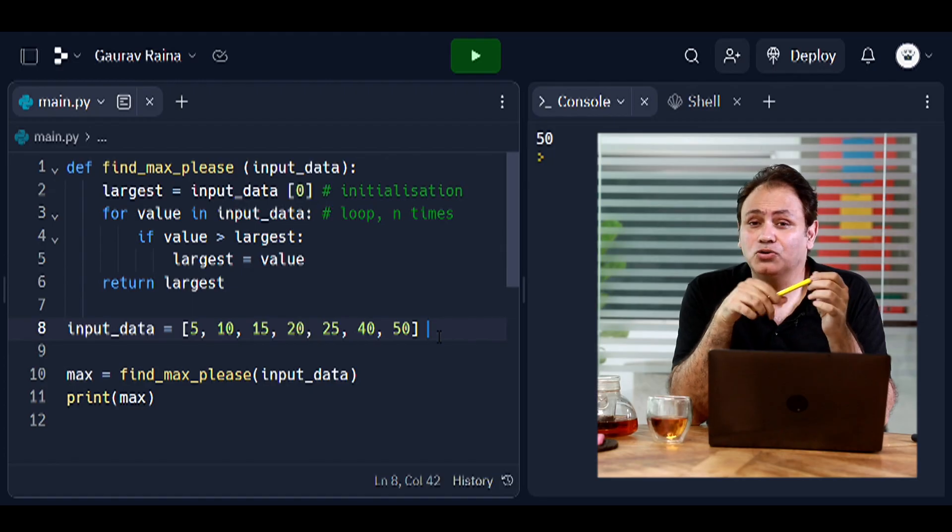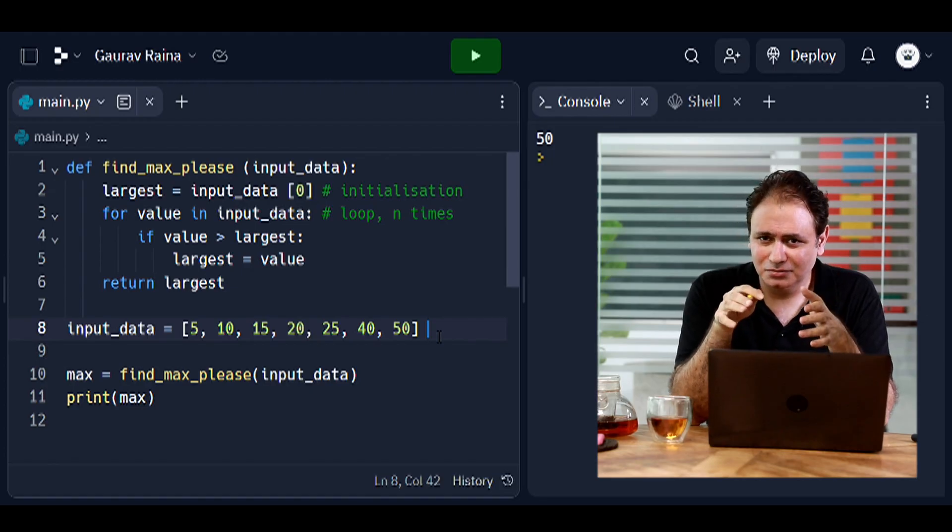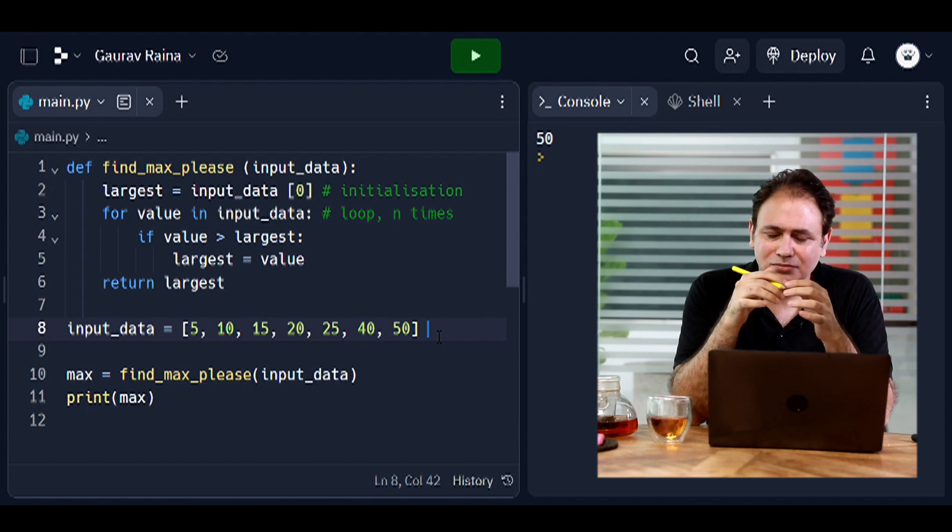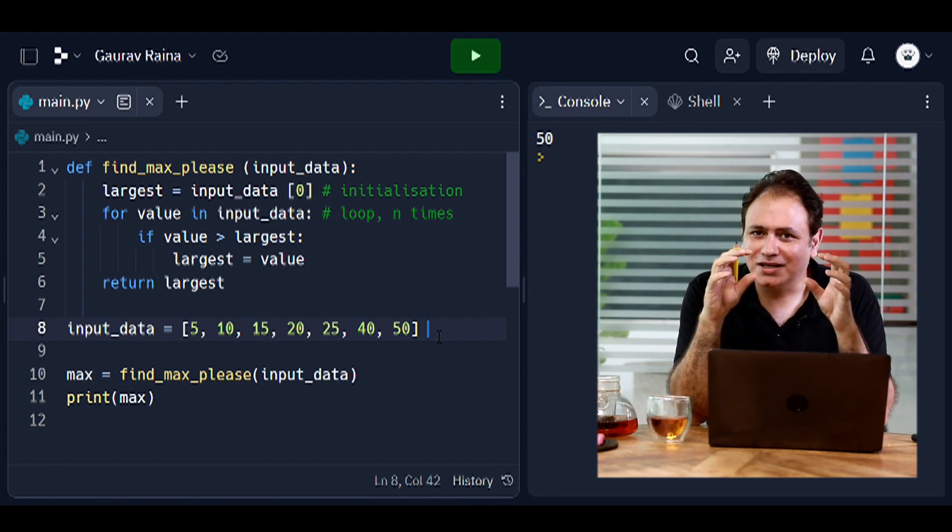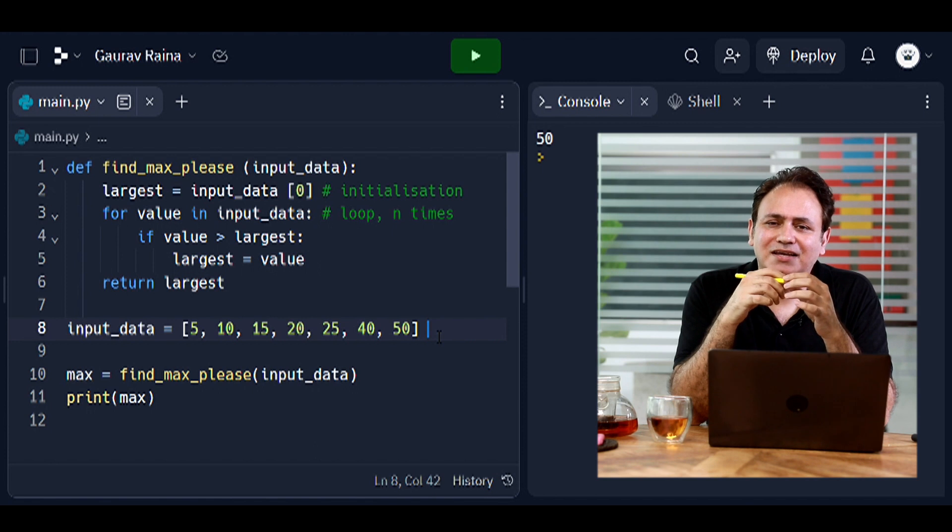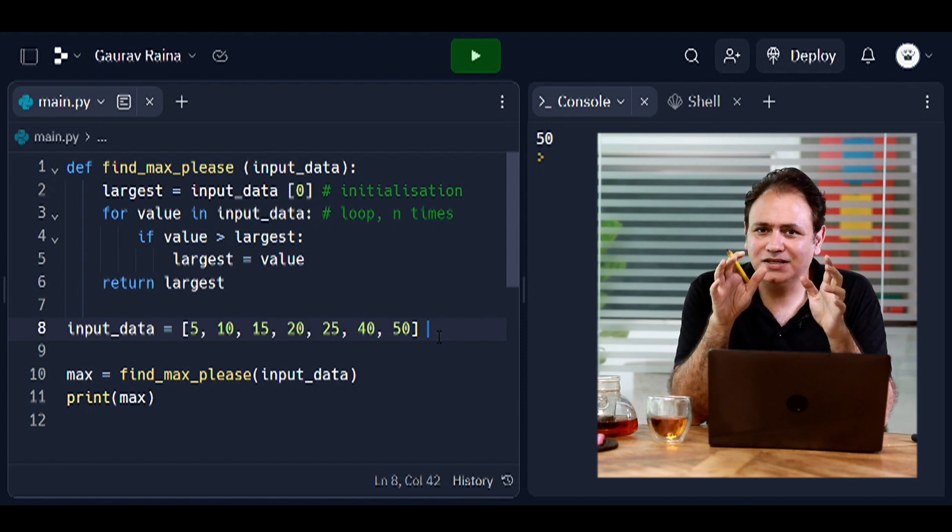OK, so now we're going to shift to Replit. We've actually written up the code. I'm not going to go through the code in detail, except that I'm going to highlight two things. Number one is an initialization phase, and the second is a looping, because both of these are important.